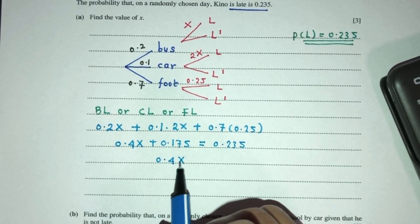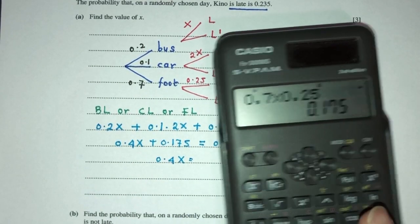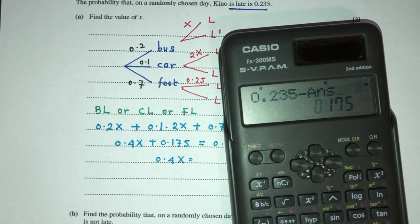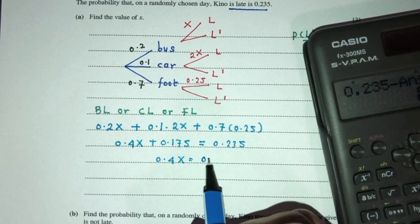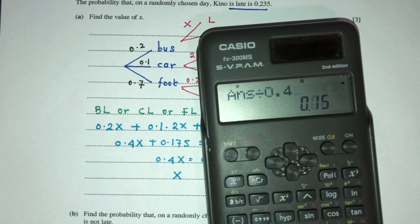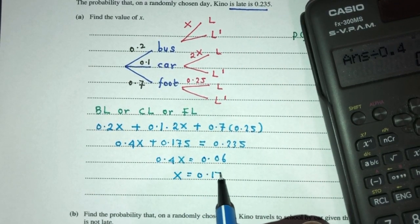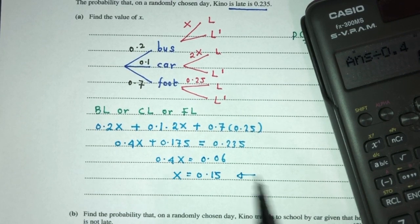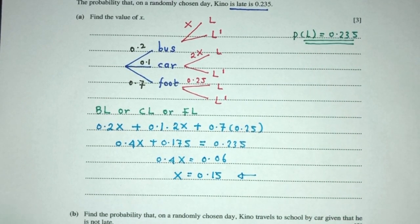Therefore 0.4x equals 0.235 minus 0.175, which is 0.06. X will be this divided by 0.4, that should become 0.15. Therefore the value of x will be 0.15 for question part A. I think the best way is really to use a tree diagram to really help you, and that's way easier to understand when we do these questions.